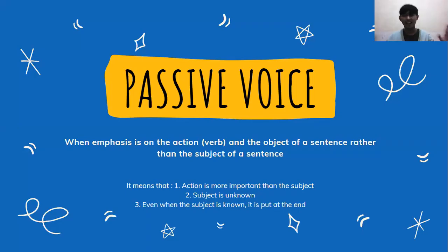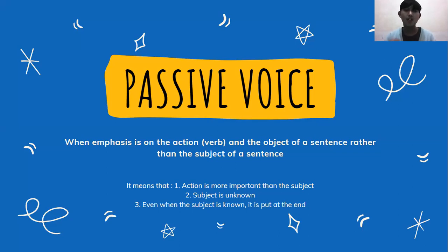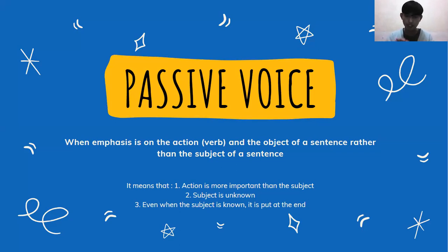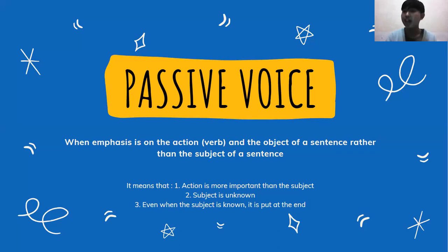Now I'm going to tell you about passive voice. Because in explanation text, we need to make sure you understand passive voice. When the passive voice is used, the focus is on the action verb and the object of the sentence rather than the subject. It means three things: first, the action is more important than the subject; second, the subject is unknown; third, even if the subject is known, it is put at the end.